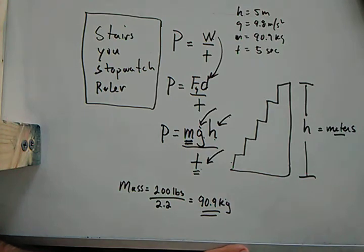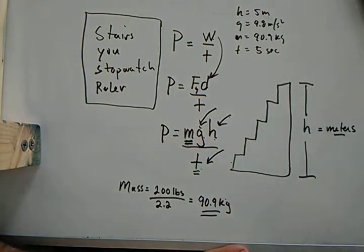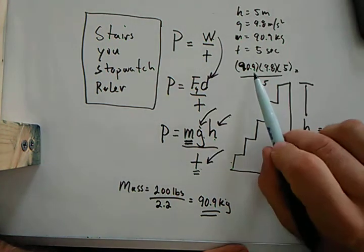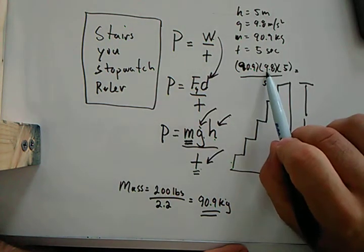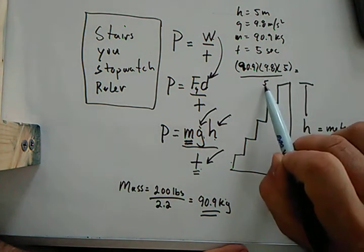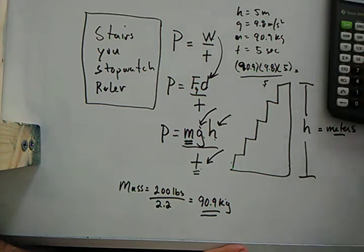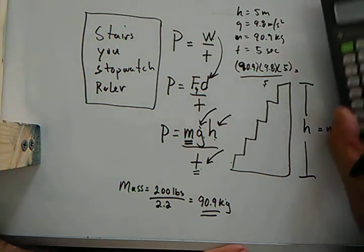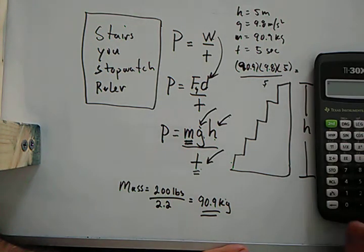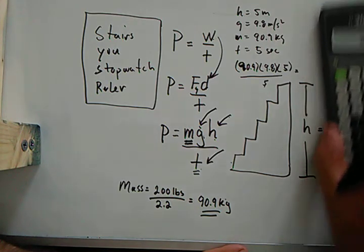Let me get the calculation done for you, and what I'm going to do is I'm going to get my wattage. So what I've done here is I've got 90.9 kilograms, 9.8 meters per second squared, the height of five meters, and then the time of five seconds. So let's see what that equals: 90.9 times 9.8.